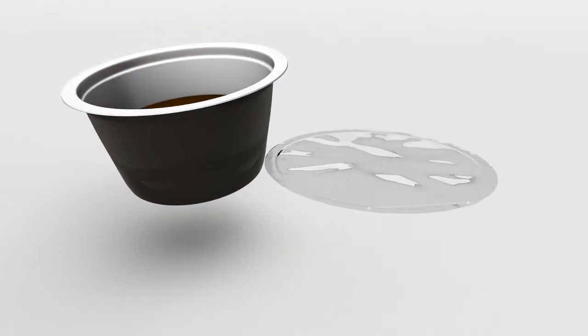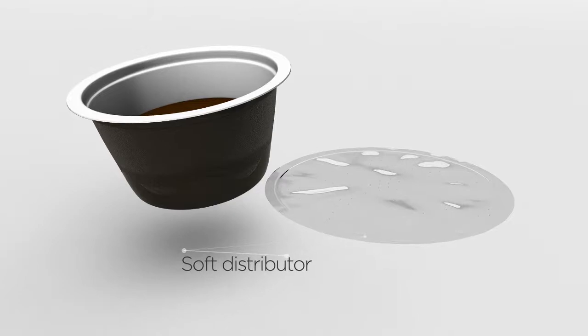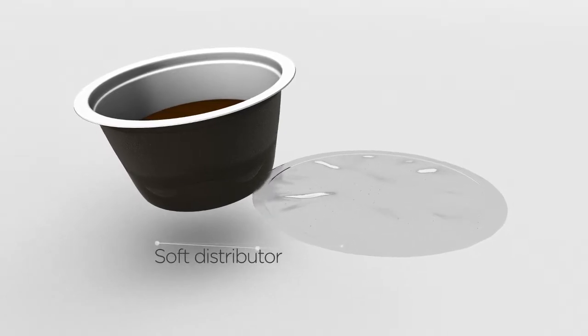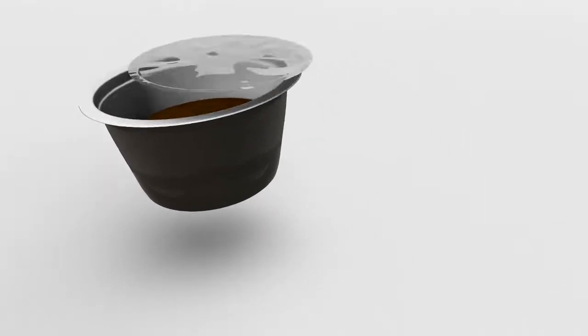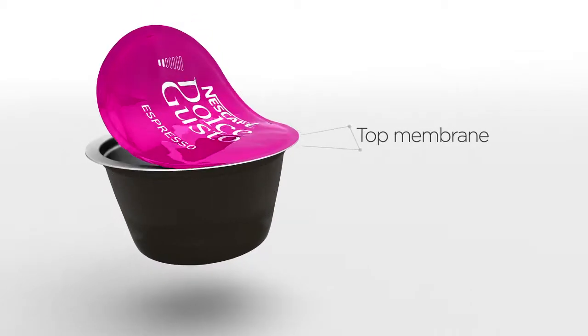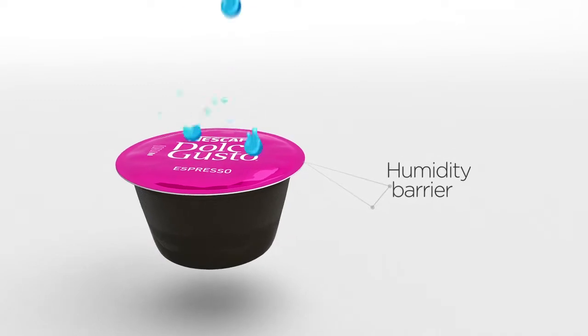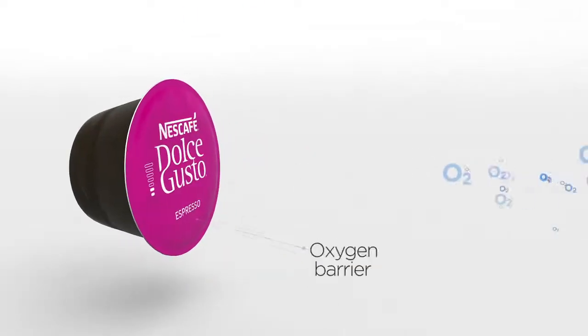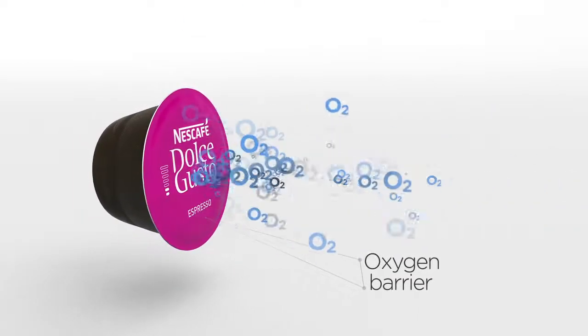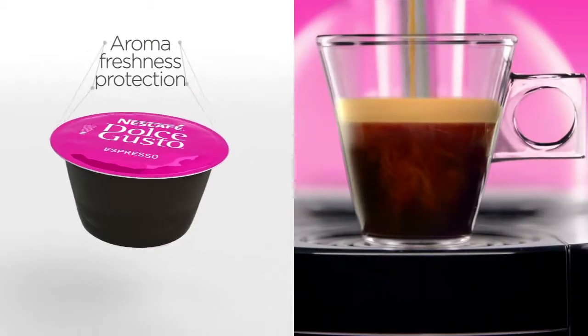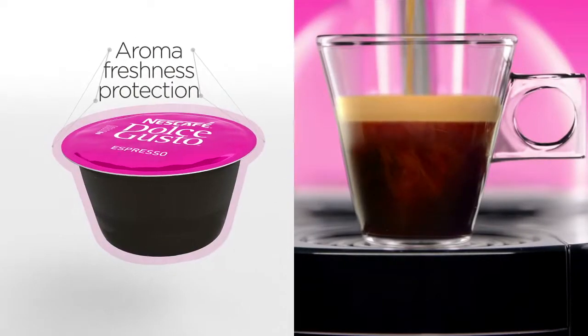The coffee. The soft distributor keeps the coffee compact for a good extraction whilst distributing the water evenly. The top membrane seals the capsule hermetically to create a powerful protection and ensure the 12-month shelf life so that the consumer can enjoy the feeling of a fresh coffee.